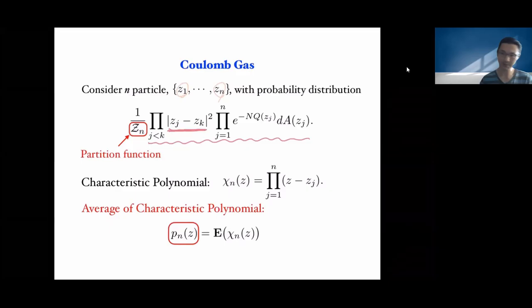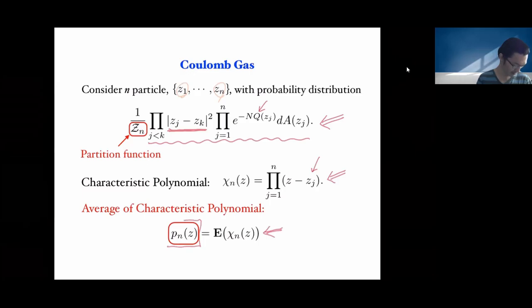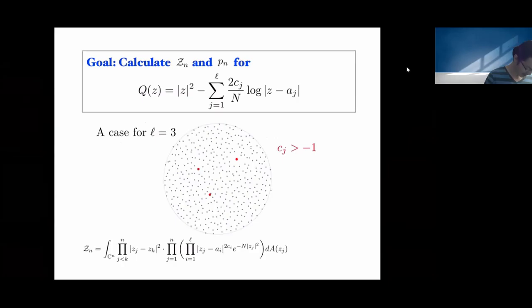The particles are given by a probability density. This probability density vanishes whenever particles collapse together, which gives repulsion between the particles. Each particle is subject to an external potential Q. We are interested in the characteristic polynomial of this system — the polynomial whose zeros are at the particle locations. Since the particles are random, distributed by this probability distribution, the characteristic polynomial is also random. We can take the expectation of the characteristic polynomial, which gives us the average characteristic polynomial p_N.